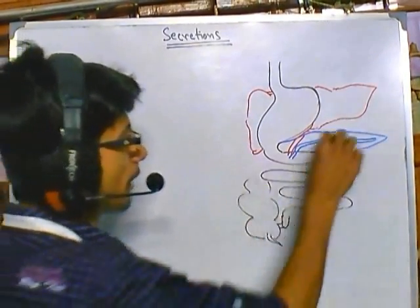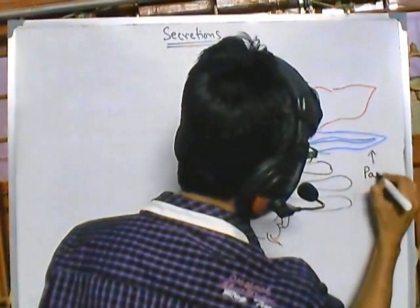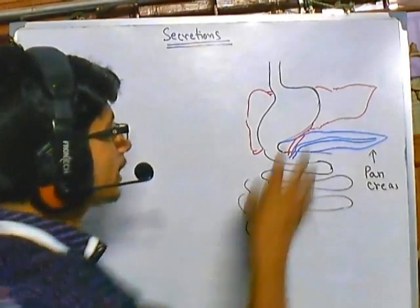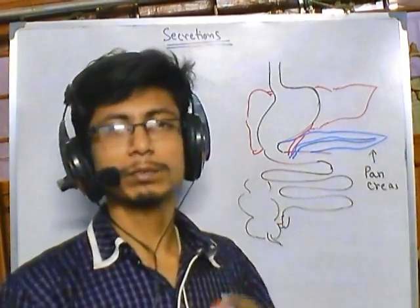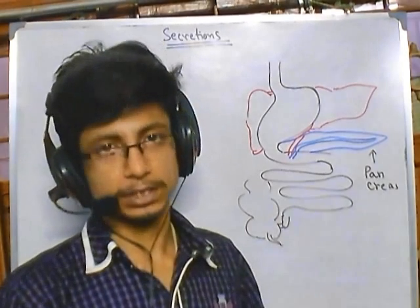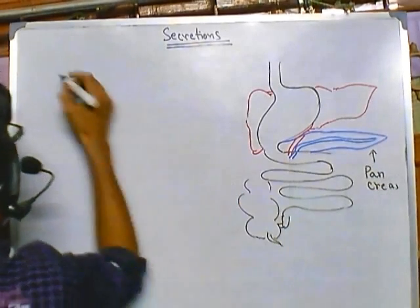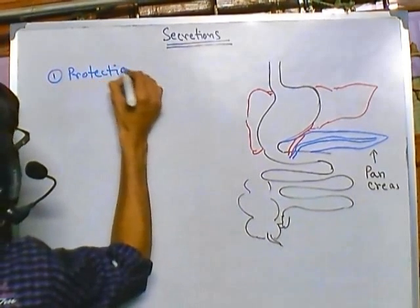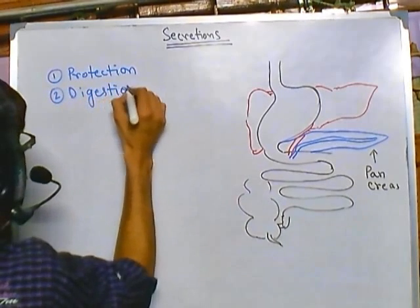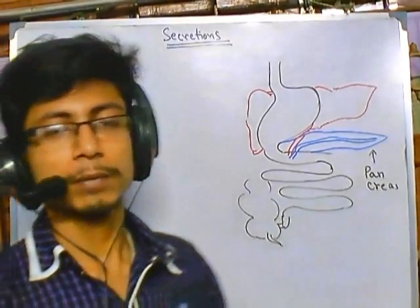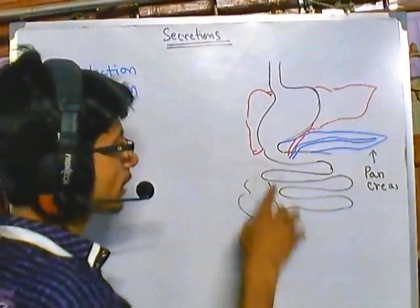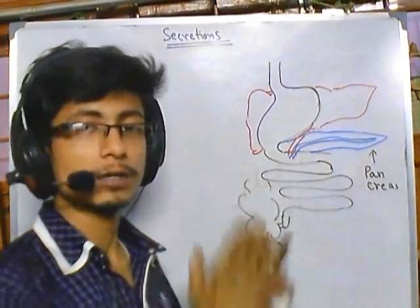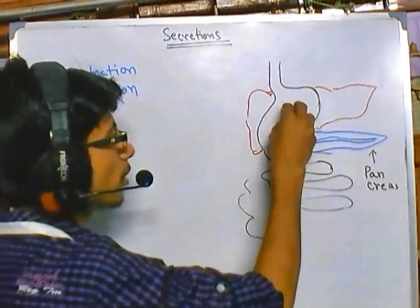In this video we will be talking about pancreatic secretion. Pancreas provides two important functions: digestion and protection. Digestion is the primary job of pancreatic secretions. Most of the time the duodenum region itself does not produce many secretions — a lot of secretions come to the duodenum from the pancreas and liver, not from the duodenum itself.